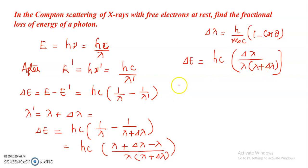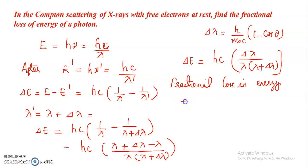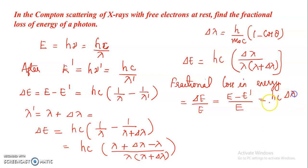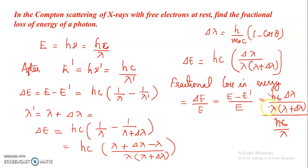So the fractional loss in energy equals delta E divided by E, that is equal to (E minus E dash) divided by E. This equals HC into delta lambda divided by (lambda plus delta lambda), all divided by E. Since E equals HC by lambda, the HC cancels and lambda cancels, giving delta lambda divided by (lambda plus delta lambda).